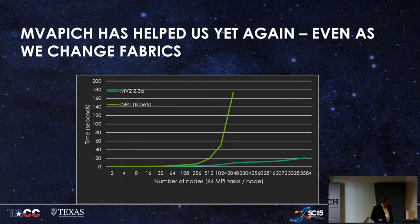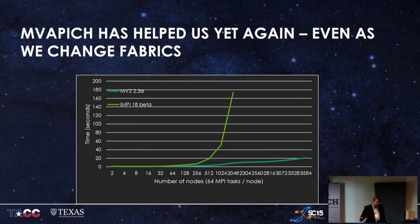We haven't had much in the way of scaling issues around the OmniPath fabric. What we did have is job launch issues — the same graph I showed earlier. But once again, even though we've changed fabrics, and even though MVAPICH was built around InfiniBand, and OmniPath is essentially InfiniBand from the QLogic side, MVAPICH has been a huge help to us in being able to do things across fabrics.